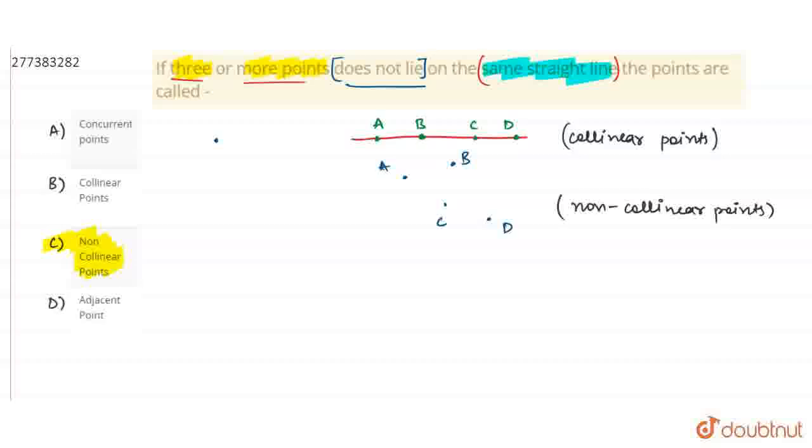And the D option is adjacent points. The question does not say that the points are next to each other, or how far apart they are. So, we cannot say anything about this. So, the answer is C part.